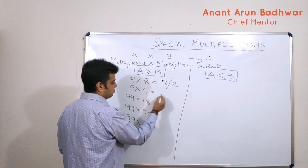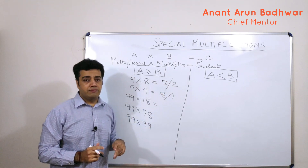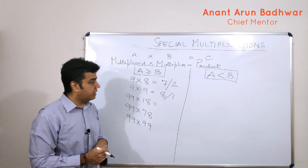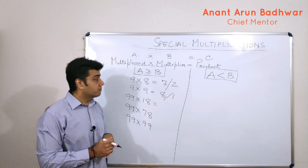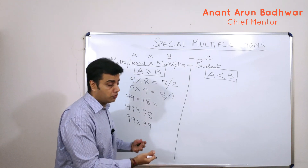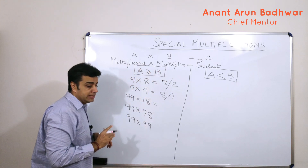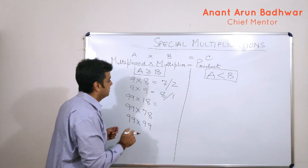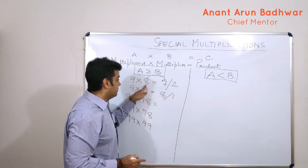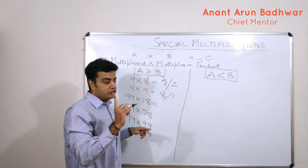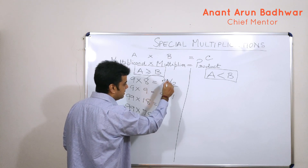The answer for 9 into 8 is 72, and for 9 into 9 it is 81. Let us see why. If you multiply a number with another number which has all 9's in it, on the left hand side I get a number which is 1 lesser than the multiplier. For example, if I am multiplying 9 with 8, I write 7 — one smaller than 8. Then how much do I need to add to this 7 to get a 9?